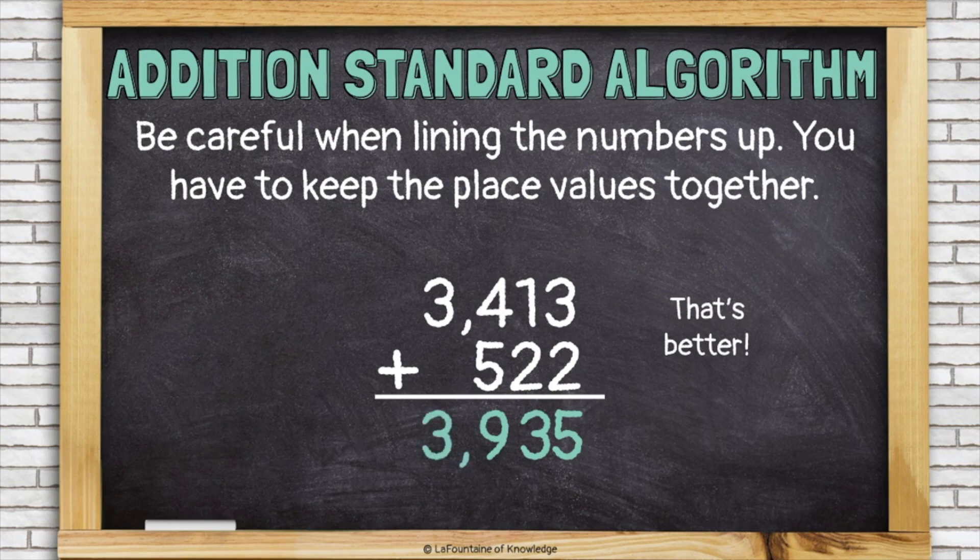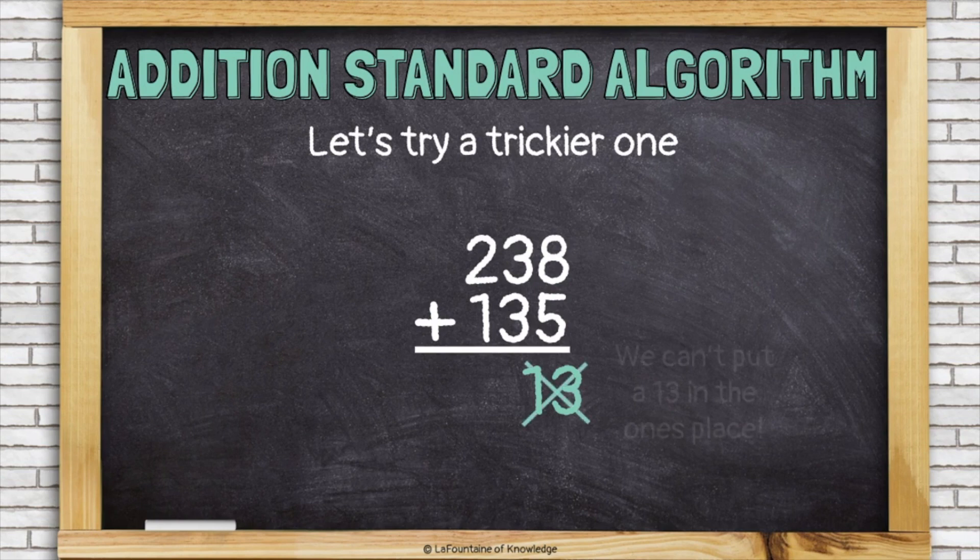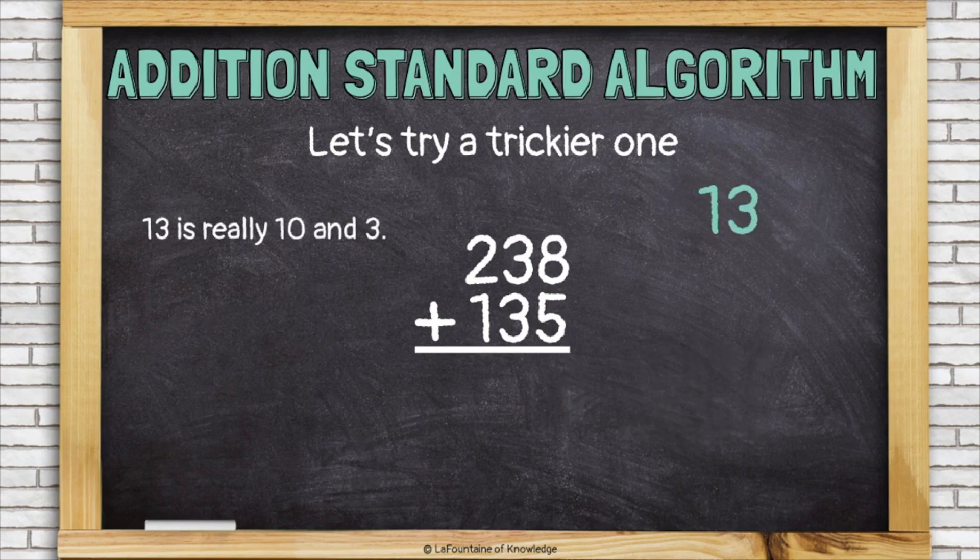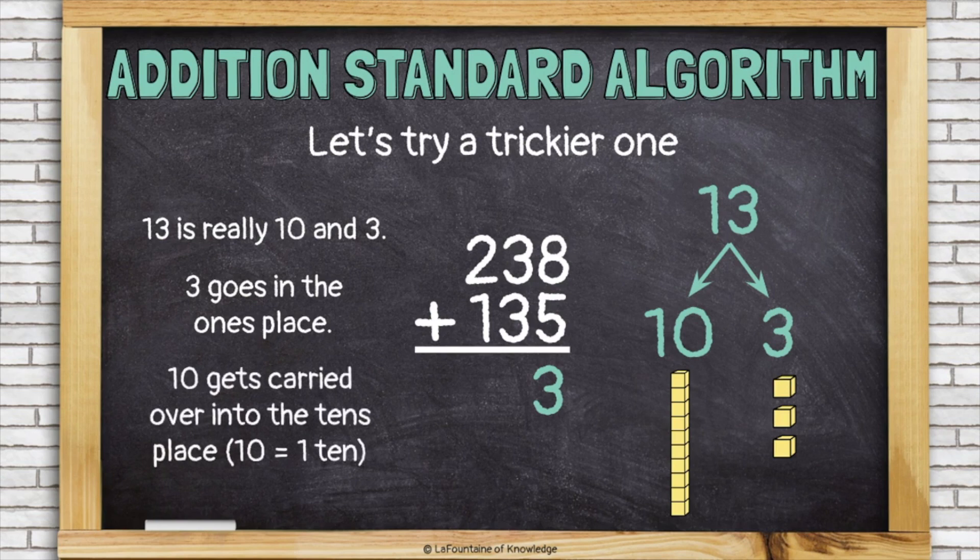3,935. Let's try a trickier one. This time we're using the addition algorithm to add 238 plus 135. So we know we need to start in the ones place. Let's add our ones together. 8 plus 5 is 13. Hmm, I can't put a 13 in the ones place. I need to regroup. This 13 is really 10 and 3, so I can put 3 in the ones place. Those are ones. But 10, that needs to go in the tens place. 10 ones is actually just 1 ten, so I can put a 1 above the tens place, adding another group of 10 over there.